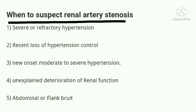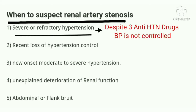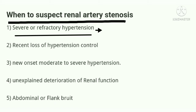There are five cases in which we have to suspect renal artery stenosis. The first one is severe or refractory hypertension. Refractory hypertension means blood pressure more than 180/110 despite taking three antihypertensive medications, and one of them should be a diuretic.